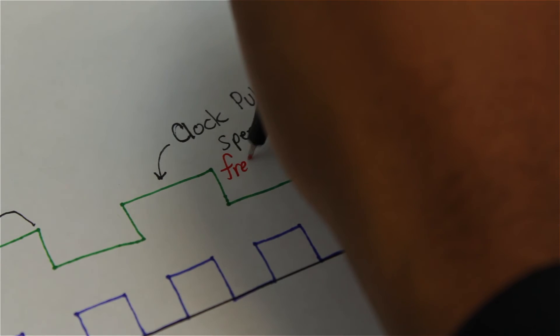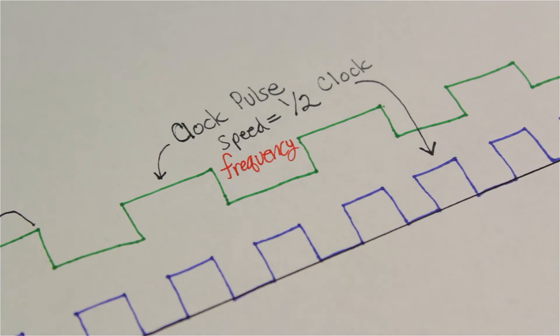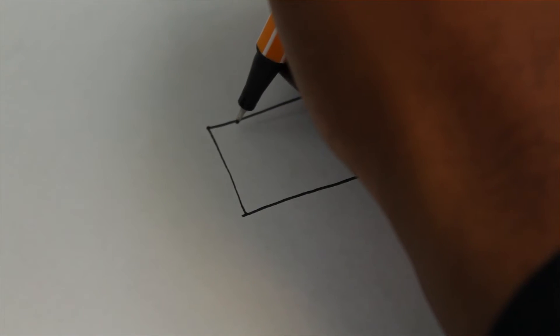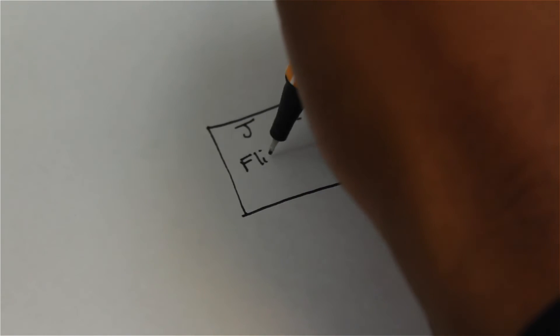Those who know a little bit more about waves will know that I mean frequency when I say speed. So, the frequency of Q is half of the frequency of the clock pulse.